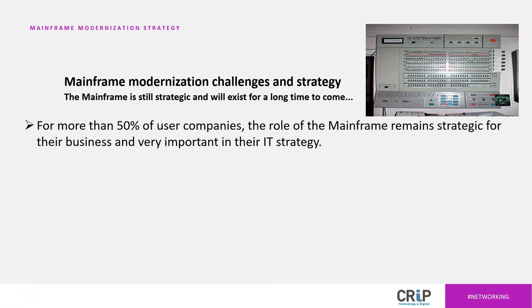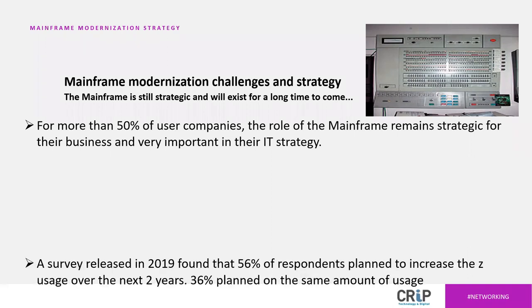Let's talk about the strategic role of the mainframe. Hopefully you'll like my picture of an IBM 360. In the US, there are approximately 12,000 companies that use the mainframe. Most of those — 75 to 80% — have been outsourced in one format or another. Even if outsourced partially or fully, the mainframe remains strategic and a really important part of their business and IT strategy.